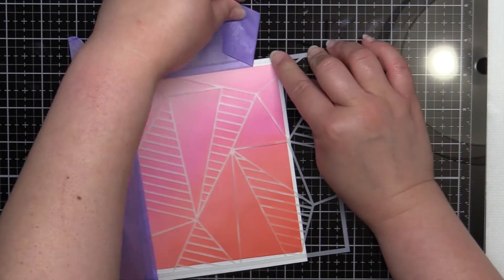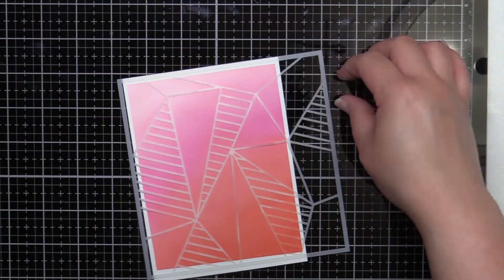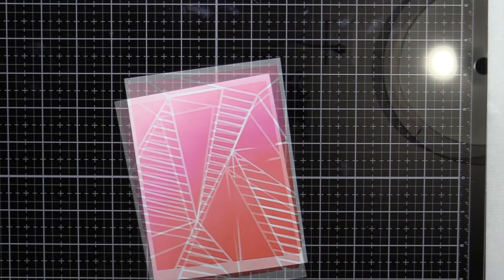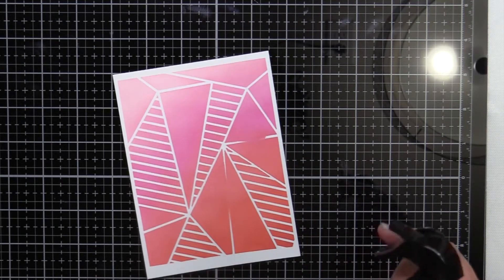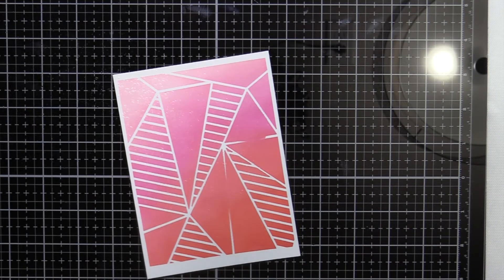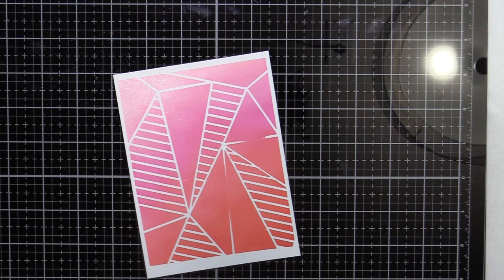Once I'm finished, I carefully peel off the tape and stencil and then spritz my panel with water and shimmer spray. Here you can see where I had run-ins with the tear in my stencil. I let that dry completely and then trimmed it down to 5 1⁄4 by 4.